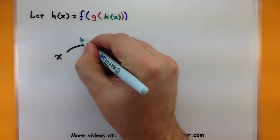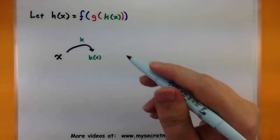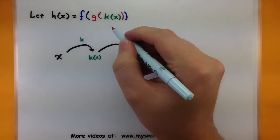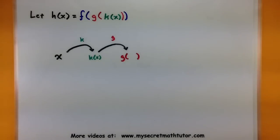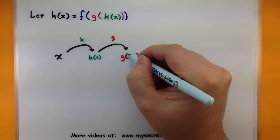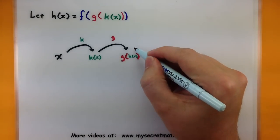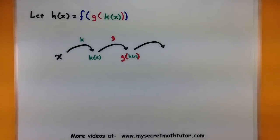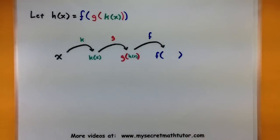So k would get a hold of it and produce some sort of value, let's call this k of x. Now after it's done producing its value, it would get fed into the next function. And that function is g. So it produces another value, this one is at g of k of x. And the very last one that it gets fed into would be our f function. And this would produce f of g of k of x. So we have lots of packaging up here.